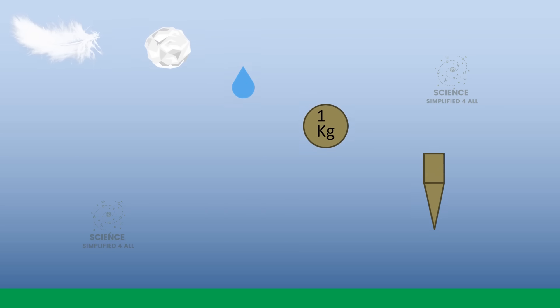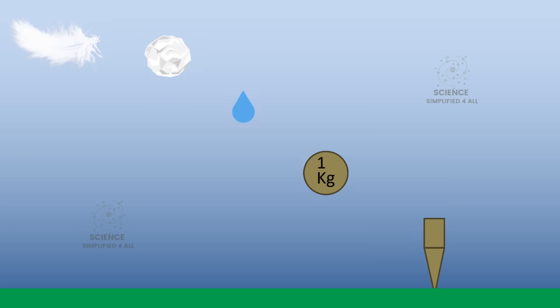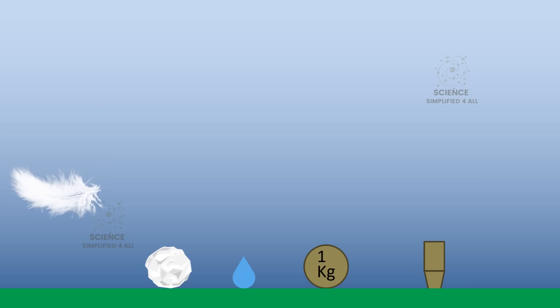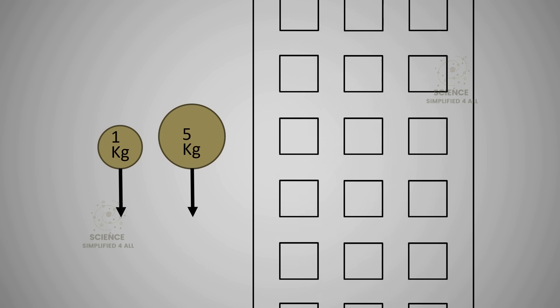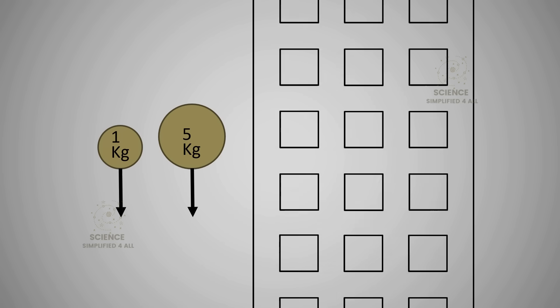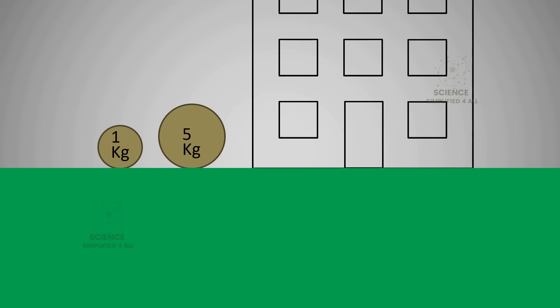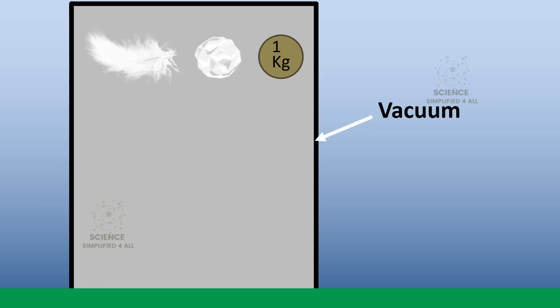This resistance is different for different objects. It depends on the object's surface area, its shape, its smoothness, and its density. That is why a paper ball or feather falls more slowly than an iron ball. Between a 1 kg and a 5 kg iron ball, all these properties are almost the same. Only the size is slightly different. So the air resistance they experience is nearly equal and they fall together. But paper, sponge or feathers experience much more resistance and that slows them down. Inside a vacuum chamber where there is no air at all, everything, no matter how light or heavy, falls at the same speed.